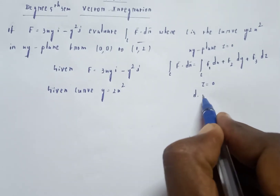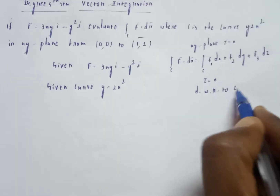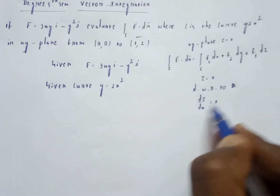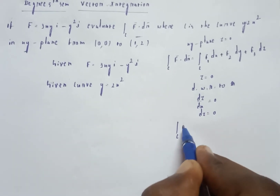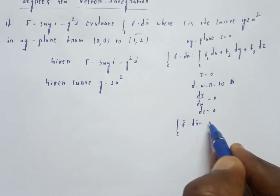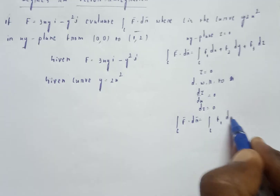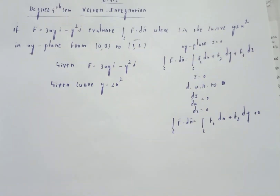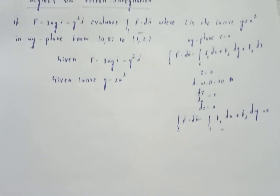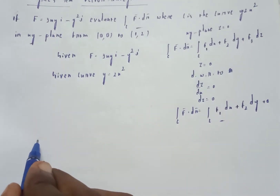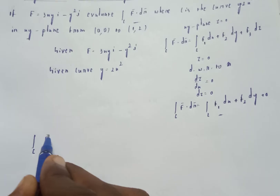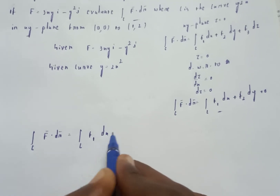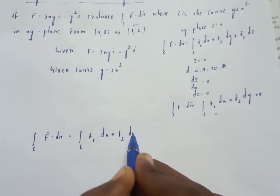Since z is equal to 0, we apply the formula: integral c F·dr equals integral c f1 dx plus f2 dy. The f3 dz term drops out.